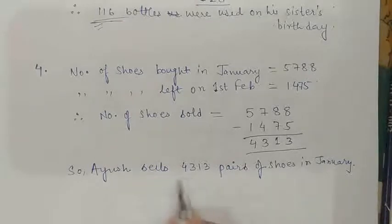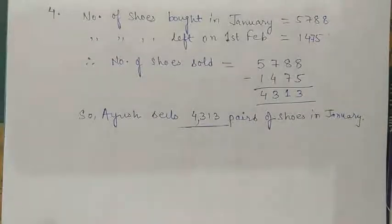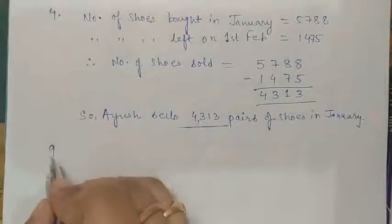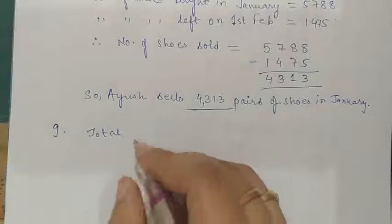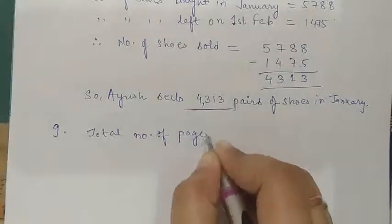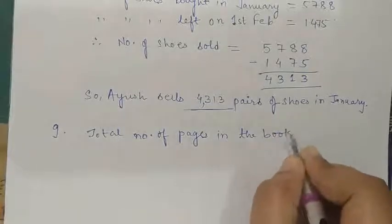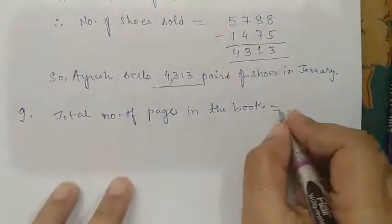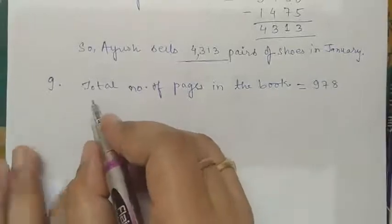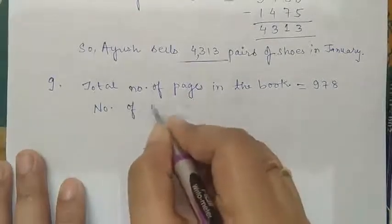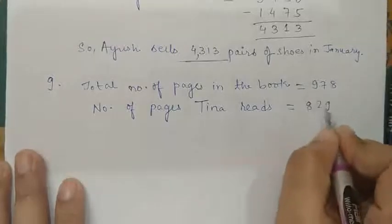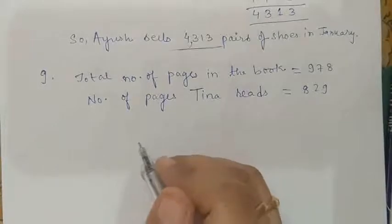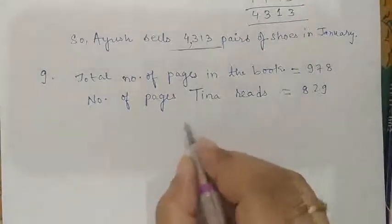Now let me take another question, number 9. Tina is a girl; she reads 829 pages of her storybook and the book had 978 pages. So the total number of pages in the book is equal to 978, and the number of pages Tina reads is equal to 829. So we have to find out the remaining pages she still has to read.